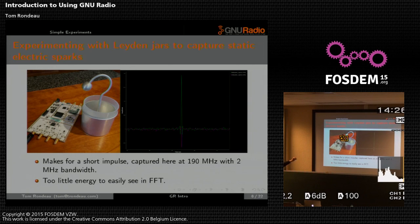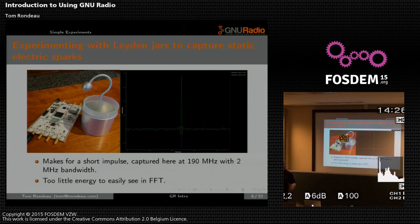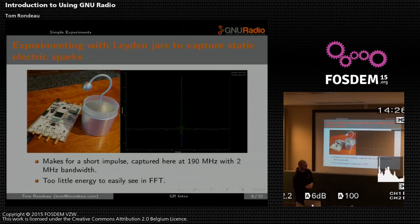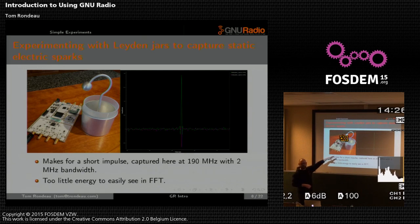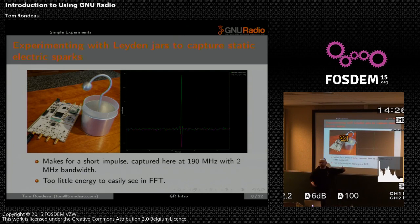This is a Leiden jar. What we'd call it today is a capacitor. You can charge it up with static electricity — building up thousands of volts and then discharging it as a spark. It's essentially a large static shock, depending on how much you charge it. This was an old 19th-century tool that scientists used to study electromagnetic fields and static electricity in general.